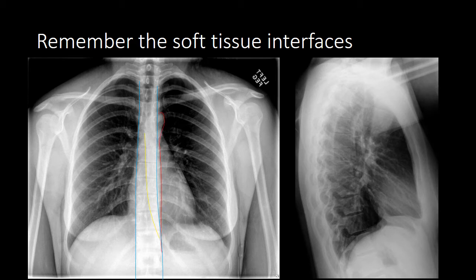To quickly review those interfaces: we have the azygous esophageal recess, the paraspinal lines, the descending aorta, the heart borders, the right paratracheal line, the pleural surfaces, and the hemidiaphragms. On the lateral radiograph, we can see the posterior wall of the trachea, the right and left bronchi, the right and left pulmonary arteries, the heart border, the pleural surface, and the hemidiaphragms. Continually looking at each of these lines on every radiograph will help you identify subtle abnormalities and localize where those abnormalities are.